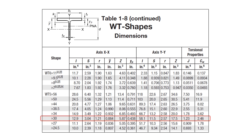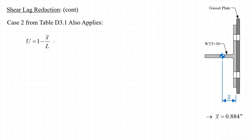Zooming in on the properties for the WT5 by 30, the distance from the outside flange to the centroid of the section is tabulated as 0.884 inches. Note that in Chapter 1 notation it's tabulated as y-bar, but this does correspond to the connection eccentricity x-bar in the shear lag reduction equation. Now we can calculate U as 1 minus 0.884 inches divided by 12, giving U equal to 0.9263. Considering both Case 2 and Case 7, we're permitted to take the larger value, so we use U equal to 0.9263.